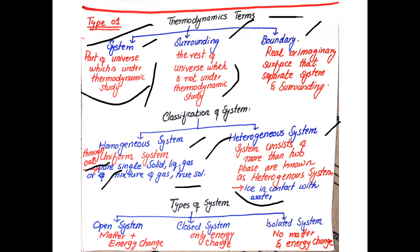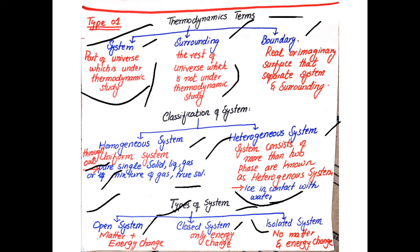There are three types of systems: open system, closed system, and isolated system. An open system is one in which both matter and energy can be exchanged between the system and surroundings. A closed system allows only energy exchange but no matter exchange. An isolated system allows neither matter nor energy exchange with the surroundings.